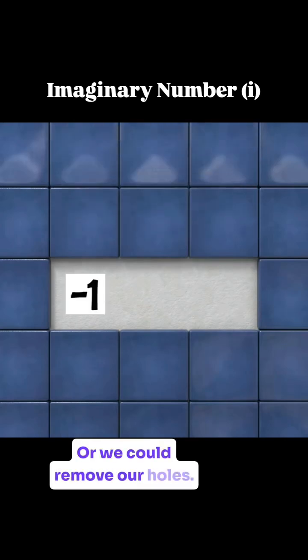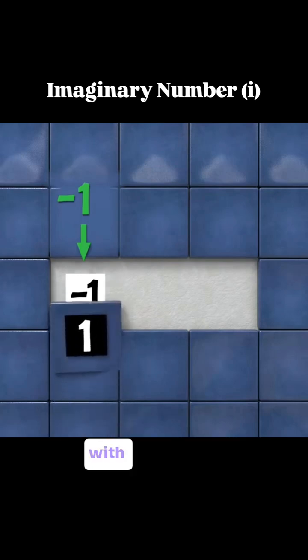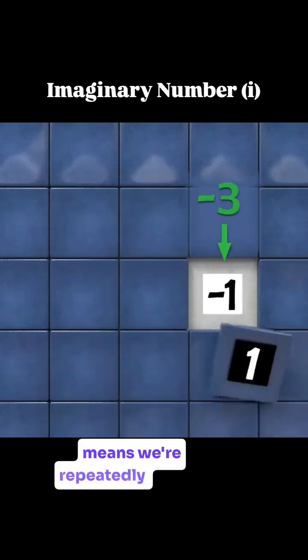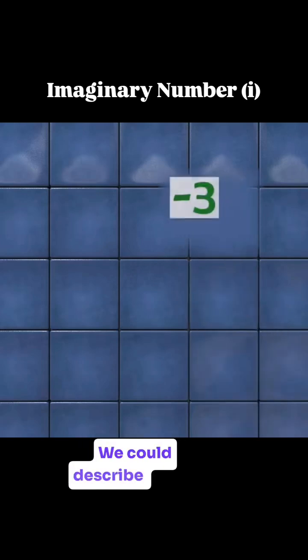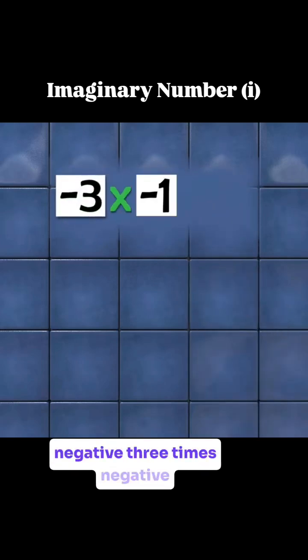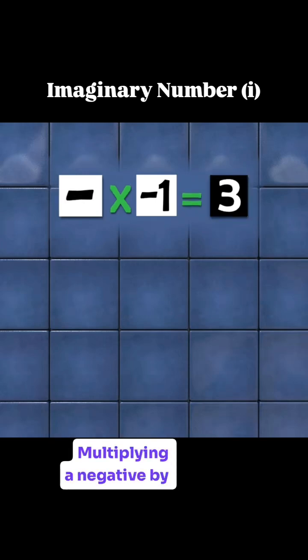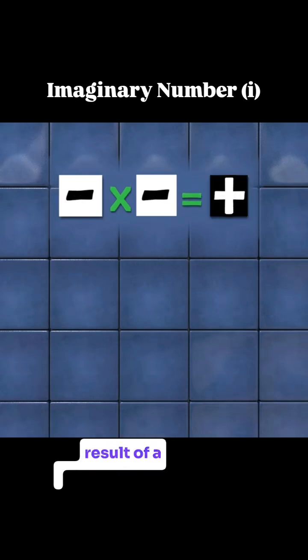Or we could remove our holes. Removing a hole means we fill it in with a positive value. If we remove a hole 3 times, it means we are repeatedly adding area to the shape. We could describe this as negative 3 times negative 1, which gives us a change of positive 3. Multiplying a negative by a negative gives us a flipped result of a positive answer.